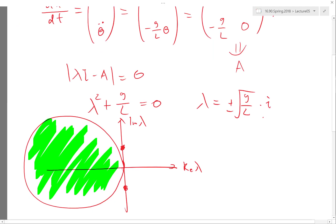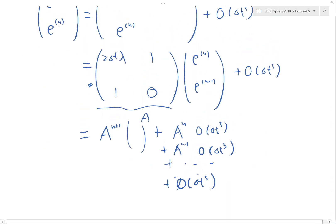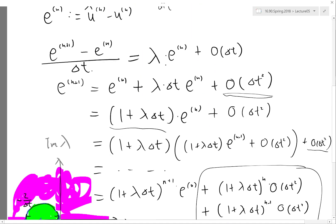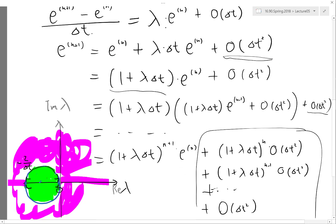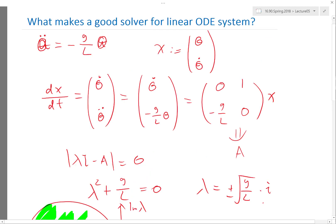For forward Euler, the region was bounded by a circle of radius 1 over delta t. For midpoint rule, it's actually a line whose length is 2 over delta t.